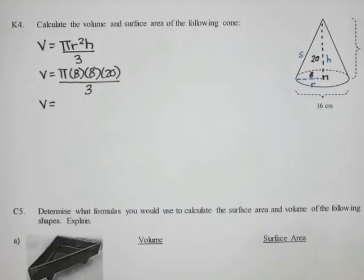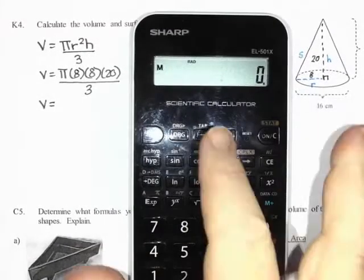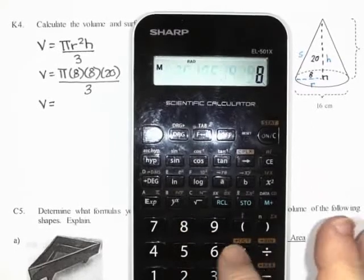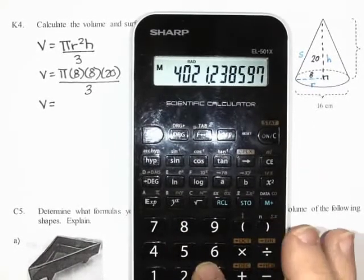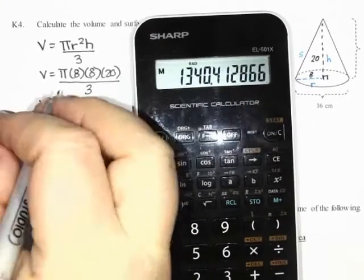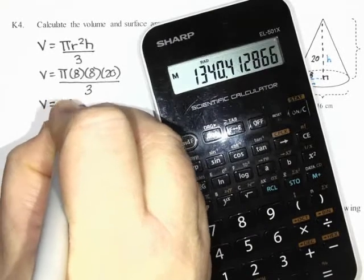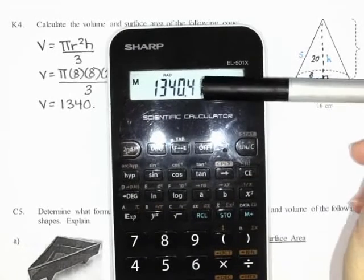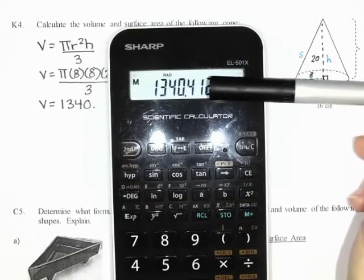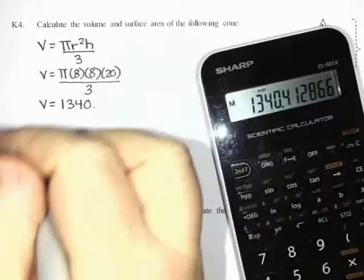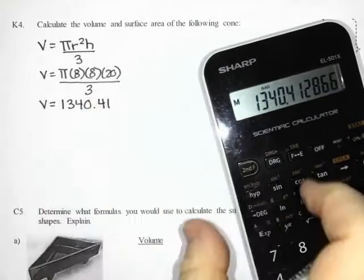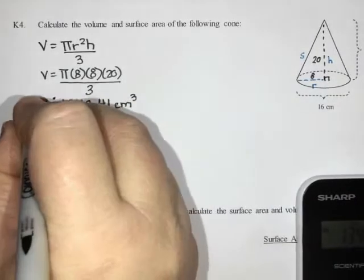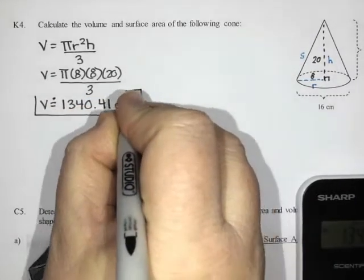That is divided by three. I'm going to calculate that on my calculator. Pi times eight times eight times 20 divided by three is 1,340.41 centimeters cubed. I rounded it, so I'm going to put a dot for my equal sign.